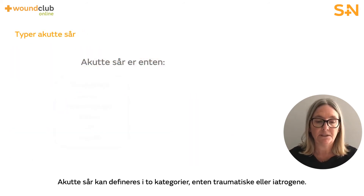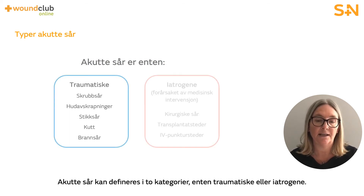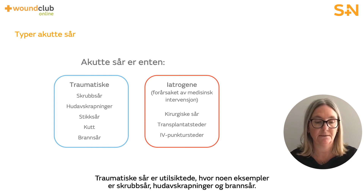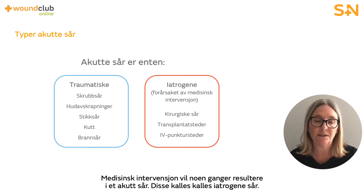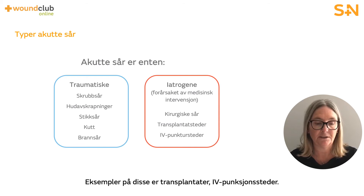Acute wounds can be defined in two categories: either traumatic or iatrogenic. Traumatic wounds are unintentional, with some examples being abrasion, skin tears and burns. Medical intervention will sometimes result in acute wounds and these are known as iatrogenic wounds. Examples of these are grafts or IV puncture sites.